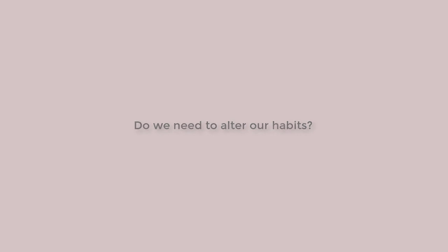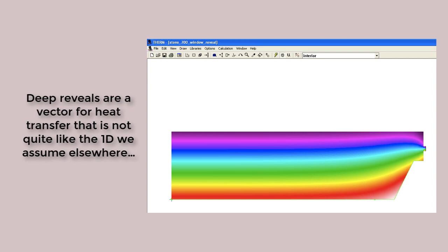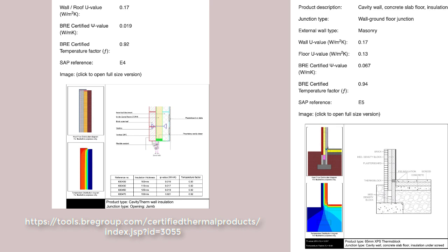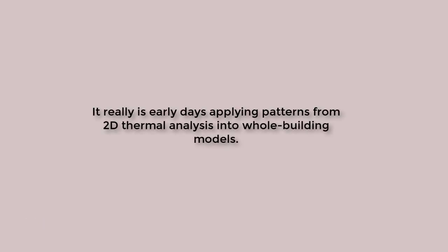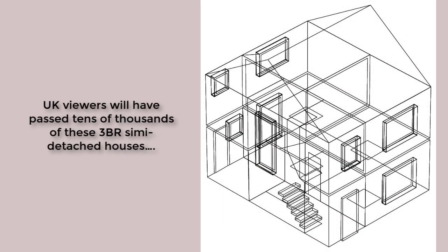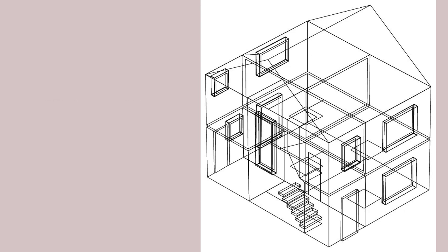Do we need to alter our habits? If you undertake a 2D analysis of heat flow or look up thermal bridge values on an accredited database site, it's easy to note that the flux and temperatures it reveals can be markedly different from a typical wall section. It really is early days translating these snapshots of steady-state patterns from 2D analysis programs into entities in our building models. To appreciate the implications of extruding the thickness of facade components from a base plane, let's look at a residential building form — ubiquitous in many regions and found across a range of construction epochs.